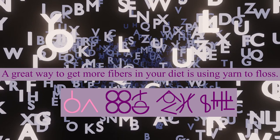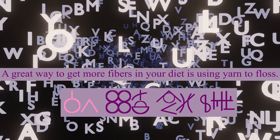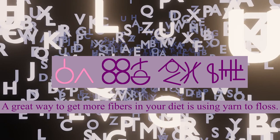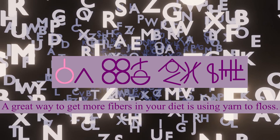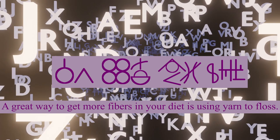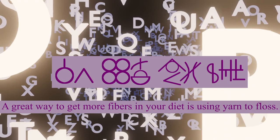So if English used a semantophonetic writing system, it might look something like this: 'A great way to get more fibers in your diet is using yarn to floss.' The phrase 'great way' is expressed using something similar to an ideogram — this character comes from a thumbs up meaning good or desirable, and this character gives it a connotation of cleverness. Because here, 'great' doesn't mean colossal or any other sense. It means this is a smart way to increase efficiency.